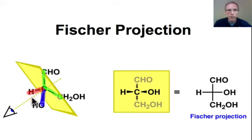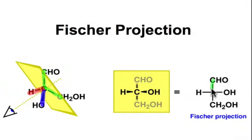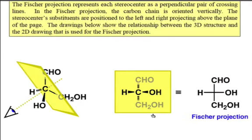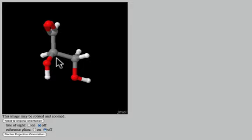The Fischer projection is the second way to represent three-dimensional geometry. Here we're going to draw the carbon backbone vertically, and we'll draw the substituents horizontally. The relationship between the Fischer projection and the line angle drawing can best be seen by looking at a three-dimensional model.